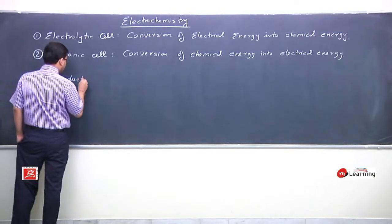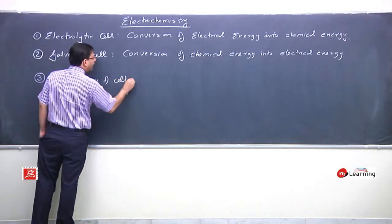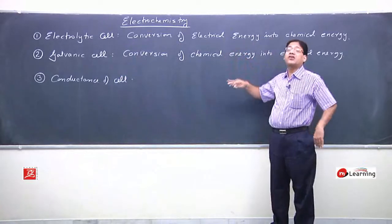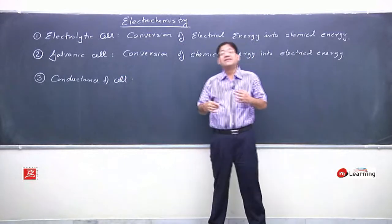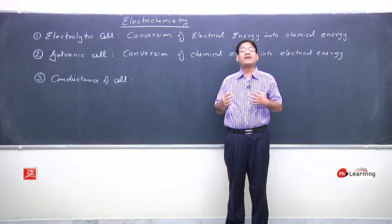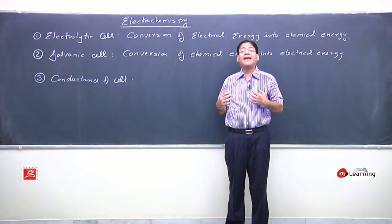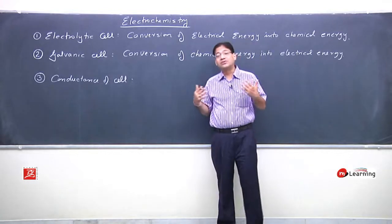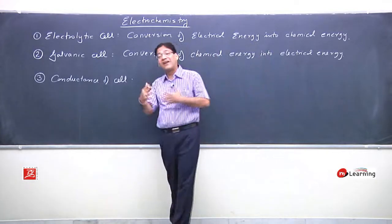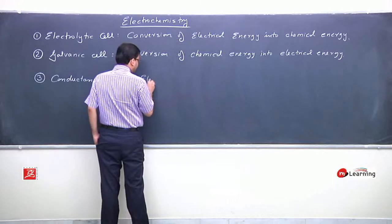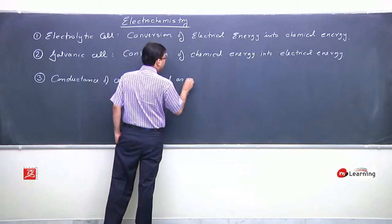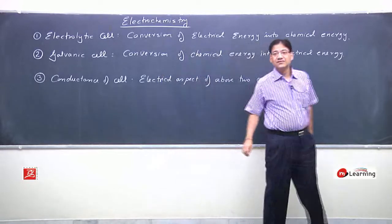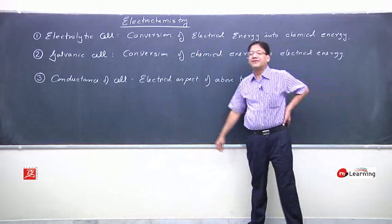The third part of the chapter is conductance of the cell. In this third part, we will deal with the electrical aspects of the above two cells: their resistance, resistivity, conductance, and conductivity — how to enhance or improve the conductivity of any electrolyte, what factors control current flow through an electrolyte. So we will study electrochemistry in these three parts.